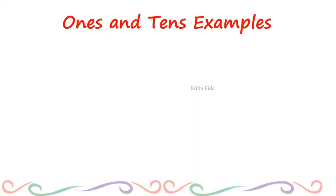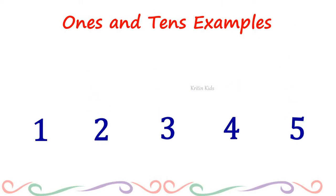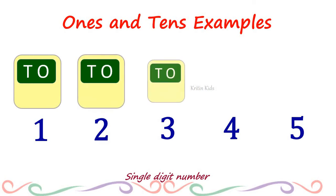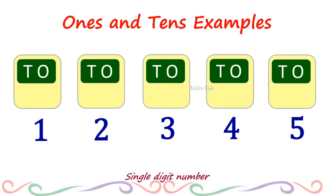Let us see these examples. We will take all the single digit numbers from 1 to 5. Now let us see what is the place value of these numbers. Place value of 1 is 1s, place value of 2 is 1s, place value of 3 is 1s, place value of 4 is 1s, place value of 5 is 1s.